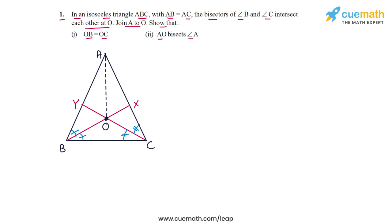In this figure, triangle ABC is isosceles with AB equal to AC. The bisector of angle B is BX and the bisector of angle C is CY. These two bisectors intersect at point O, and we have joined A to O. What we need to show is that OB equals OC, and that AO bisects angle A — meaning this angle and this angle should be equal. These are the two things we need to show.